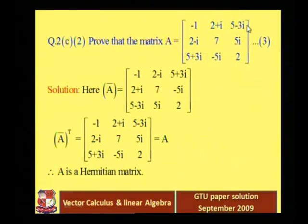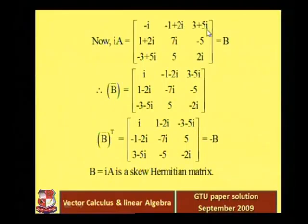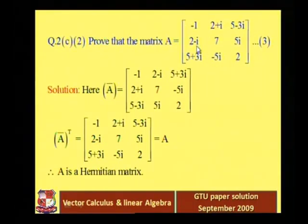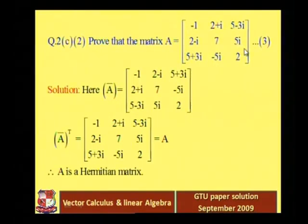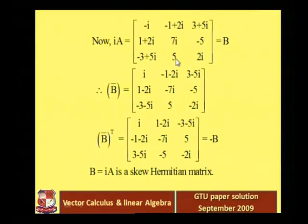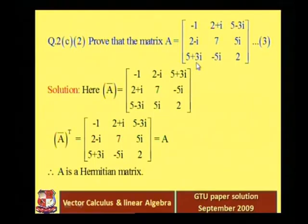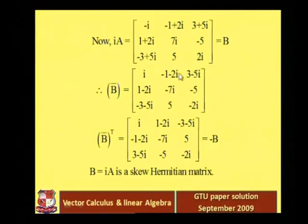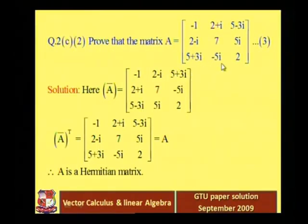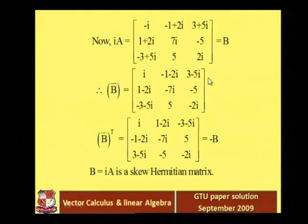Since i² = minus 1: i×(2 minus i) = 2i minus i² = 1 + 2i; i×7 = 7i; i×(5i) = 5i² = minus 5; i×(5 + 3i) = 5i + 3i² = minus 3 + 5i; i×(minus 5i) = minus 5i² = 5; i×2 = 2i. So B = i×A is fully computed.